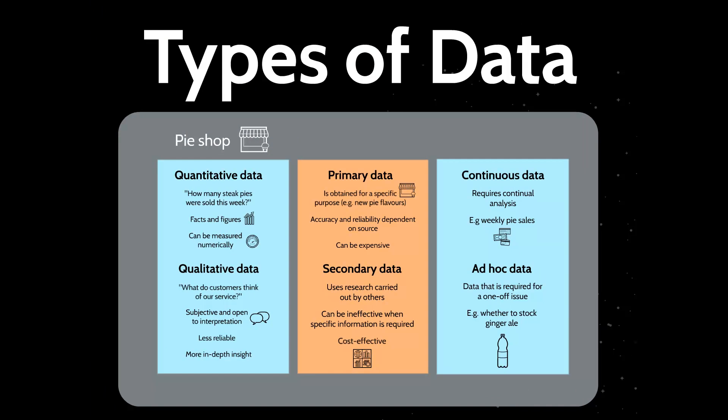So that's a breakdown — a basic introduction to different types of data. There's a lot more about data in the CIMA syllabus, and you can visit www.astranti.com for more information on study texts and videos. To summarise: quantitative data is measured numerically; qualitative data allows for more in-depth insight; primary data is specifically sourced for a purpose; secondary data is useful for more general decisions but not specific ones; and finally, the time frame — whether it needs to be monitored regularly, such as tracking your sales, or whether it's a one-off issue.